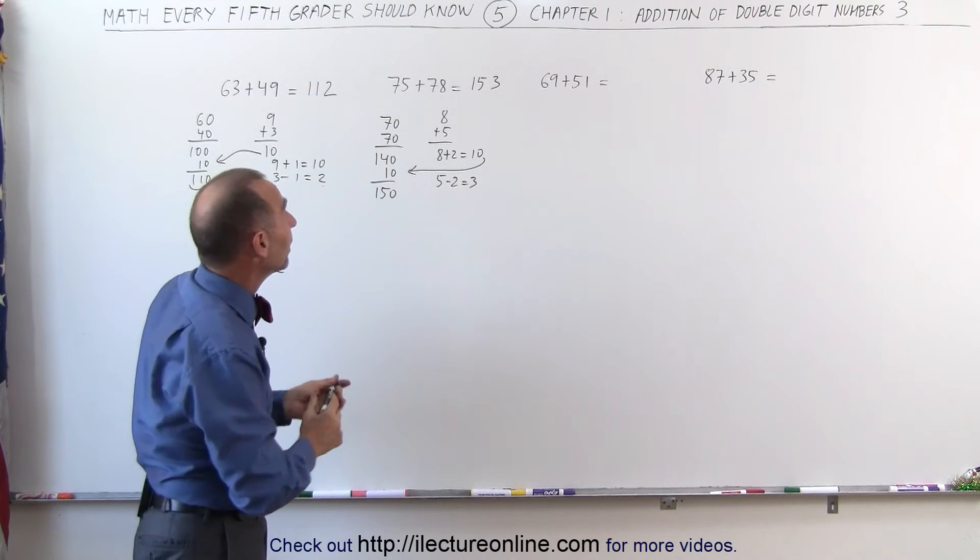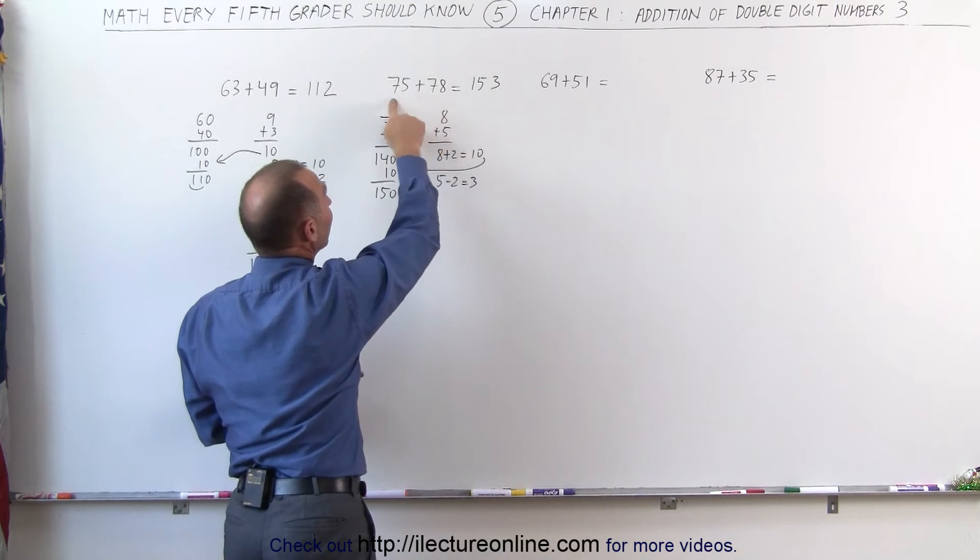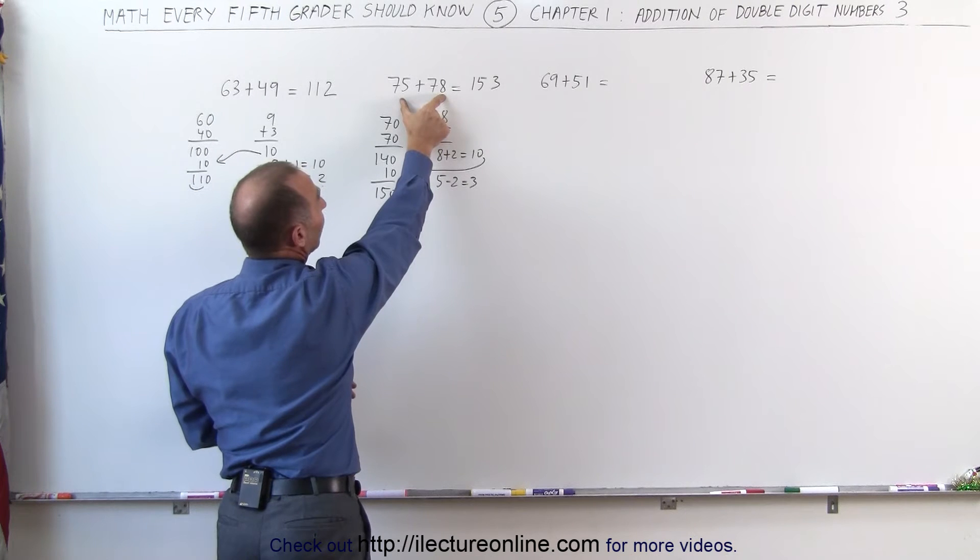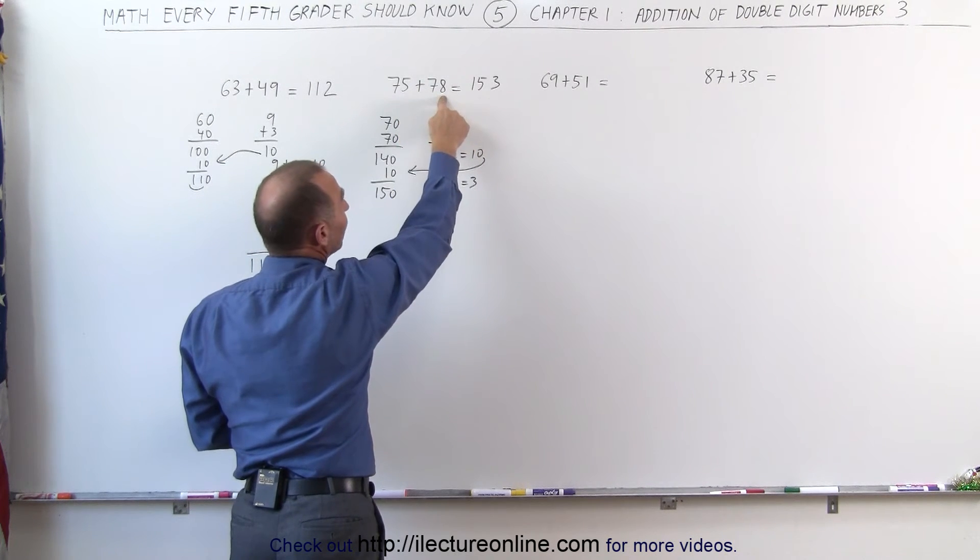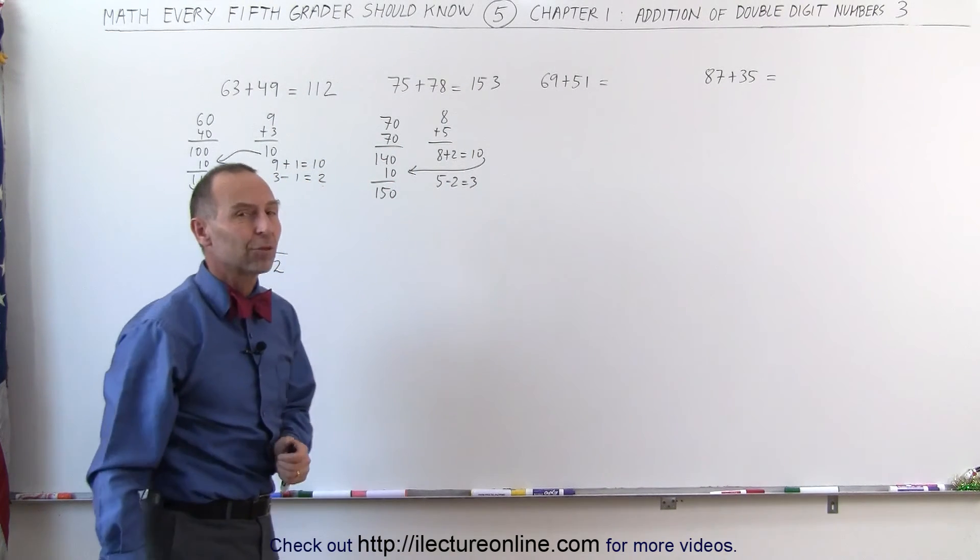In short, the way I do that is I add 7 plus 7 together. It gives me 14. But I realize I need to add one more. That gives me 15. I write that down. 5 plus 8 is 13. I already gave the 10 away. That leaves me with 3. I add the 3 there. It gives me 153.